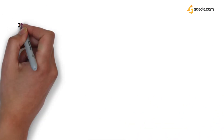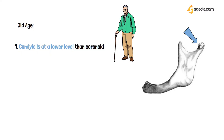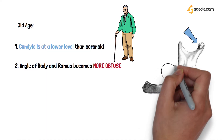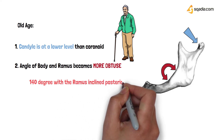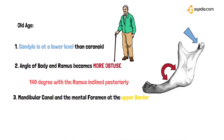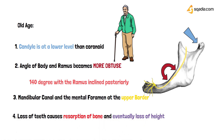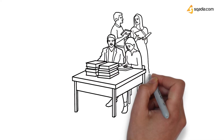In old age, the condyle is at a lower level than the coronoid. The angle of the body and ramus becomes more obtuse again, around 140 degrees, and the ramus is inclined posteriorly. The mandibular canal and mental foramen lie at the upper border of the mandible, because loss of teeth causes resorption of bone and the mandible loses height. The sigmoid notch becomes shallow again. This concludes everything about the development of the mandible.